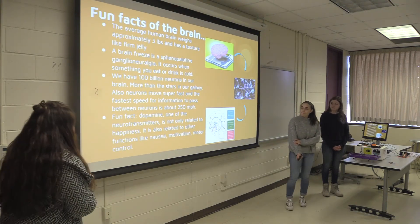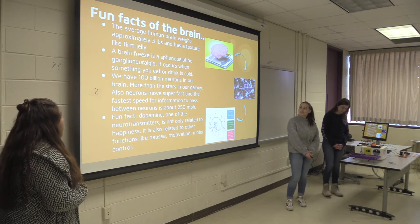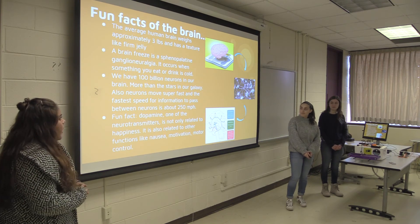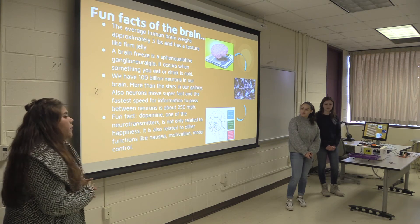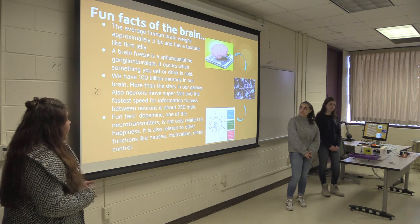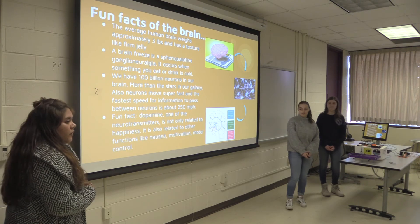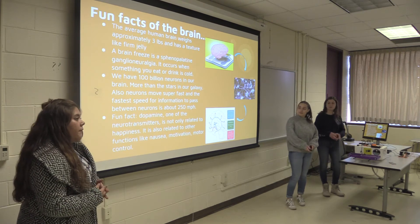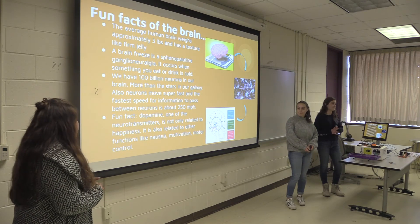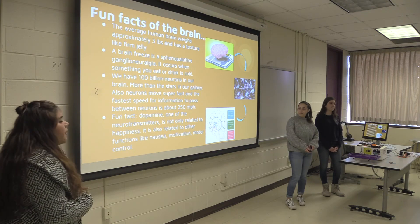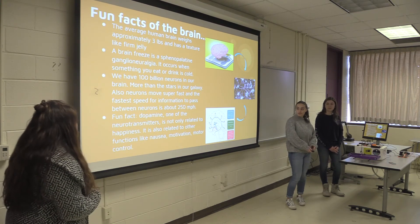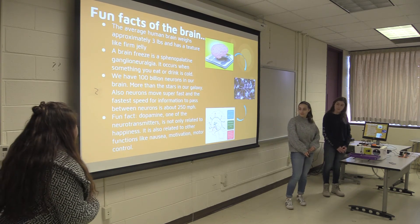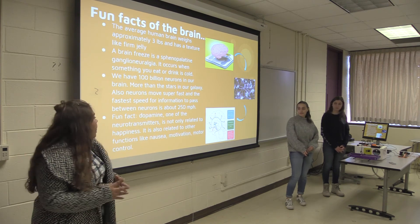Some fun facts about the brain: the average weight of the brain is about 3 pounds and it has a jelly-like texture. A brain freeze is called sphenopolitan gangloneurologia and it occurs when you eat or drink something really cold. We have a hundred billion neurons in our brain — more than the stars in the galaxy. Neurons transmit information very fast, up to 250 miles per hour. Dopamine, one of the neurotransmitters in our brain, is not only related to happiness but also to other functions like nausea, motivation, and motion control.